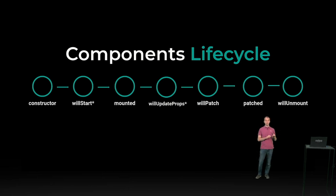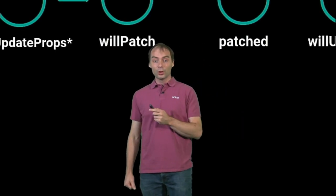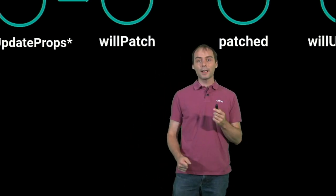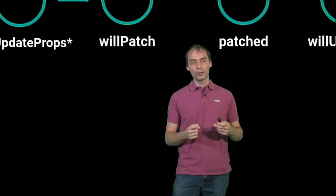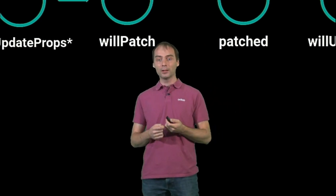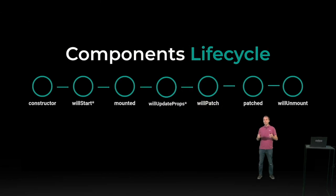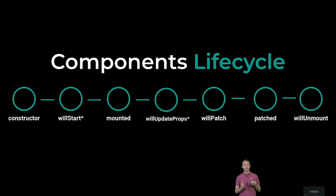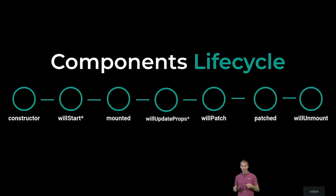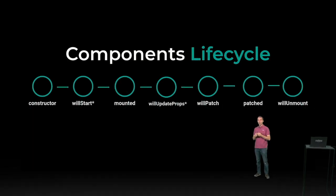The full component lifecycle in OWL is pretty standard. The constructor is called whenever your component is created — that's the time to apply your hooks, since hooks are only valid when applied at constructor time. The willStart hook is really inspired by the willStart method on Odoo widgets. It's an asynchronous method that can perform any kind of work, such as fetching data from the server, and it will delay the rendering of your component. Other notable methods are mounted and willUnmount — these are called whenever your component is rendered in the DOM and whenever it will be removed. Those methods are a perfect moment to add and remove event listeners.